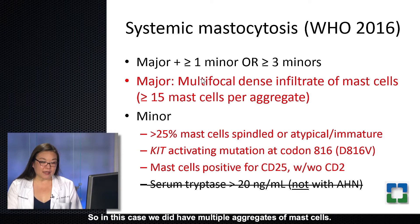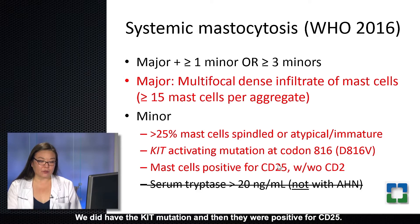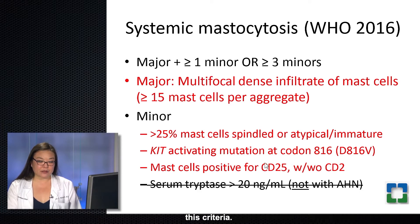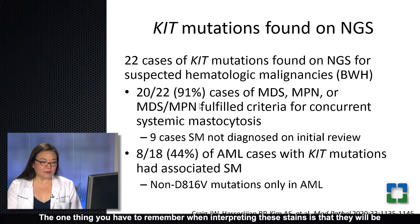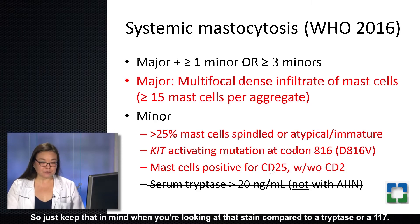In this case, we did have multiple aggregates of mast cells with greater than 15 mast cells, and they are quite immature on both the aspirate smears and core biopsy. We had the KIT mutation, and they were positive for CD25. I personally have stopped doing CD2 because of how they've rewritten this criterion. When interpreting these stains, remember that CD2 will be positive on essentially all T cells, and CD25 will be positive on a subset — so keep that in mind compared to a tryptase or CD117 stain.